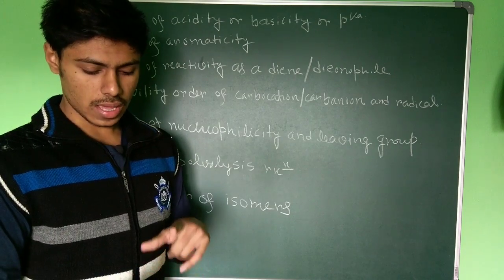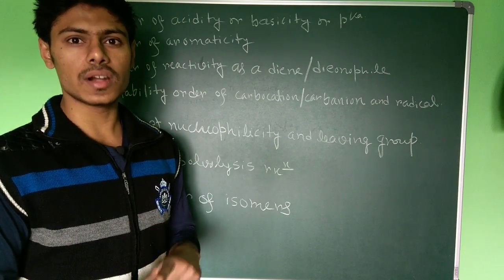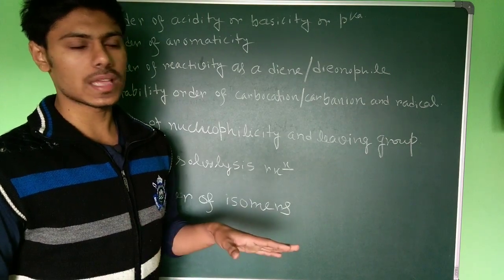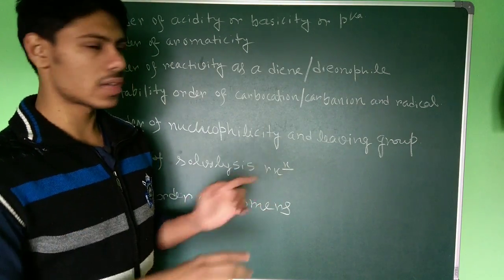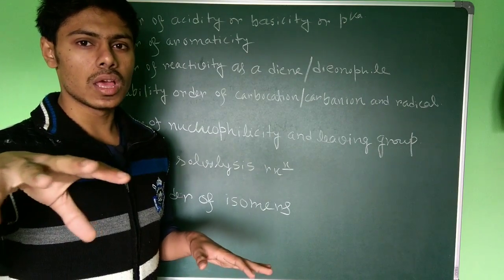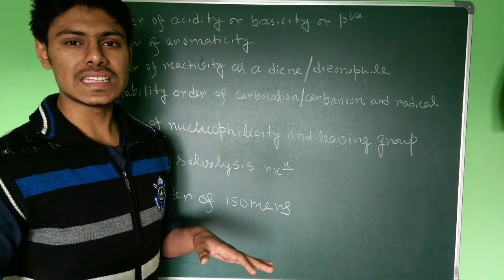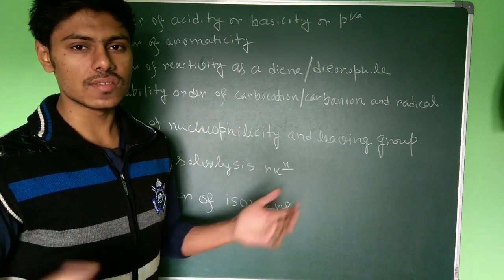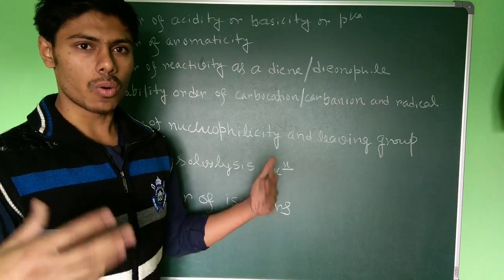In this regard, I will suggest you to look into books like J.D. March and Carey Sundberg. In these books, there are a lot of examples. Also Peter Sykes and Clayden. There are a lot of examples on different compounds' acidity and basicity, how their structure and electronic structures and steric hindrances affect the acidity and basicity. All examples you can find in these books.